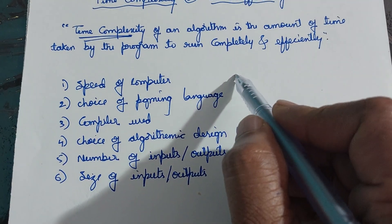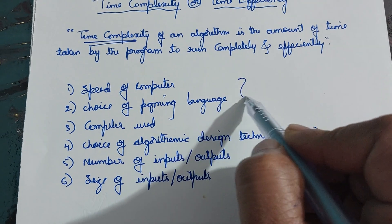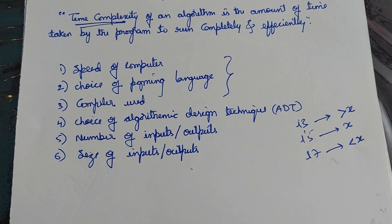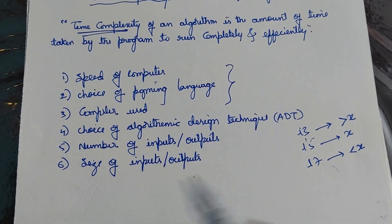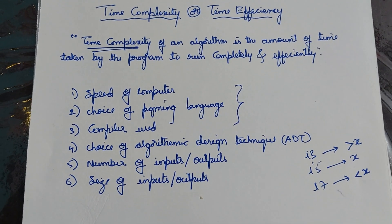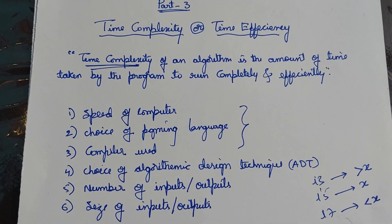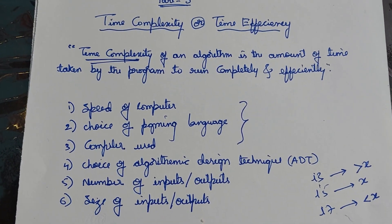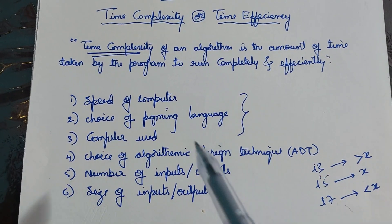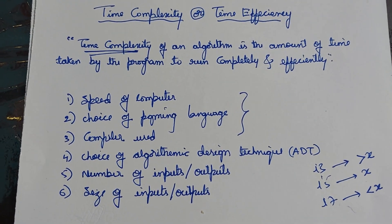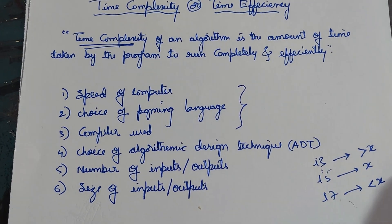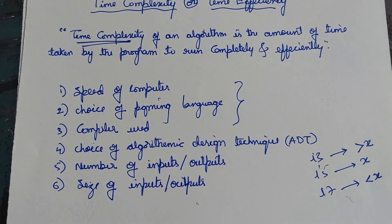So these are the first three factors, over which we don't have any control. Whatever processor, programming language, and compiler is available, that only we have to use. Now coming to the fourth one: choice of algorithm design technique.